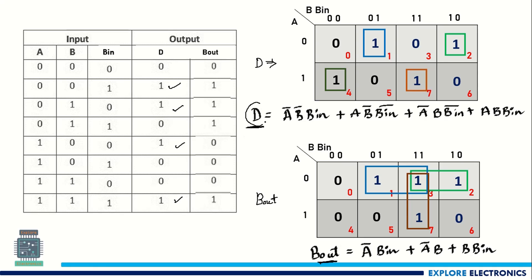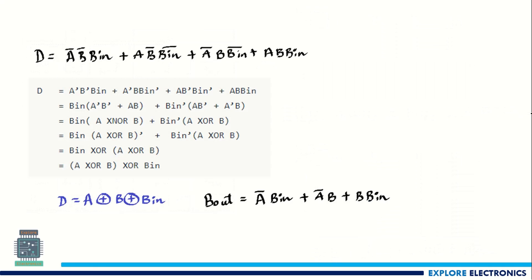We can further simplify D: it simplifies to A XOR B XOR B_in, which is again a three-input XOR gate — the same as what we get in a full adder for sum. Similarly, the B_out expression is A_bar·B_in + A_bar·B + B·B_in. Using these two expressions we can now write the logical circuit for the full subtractor.